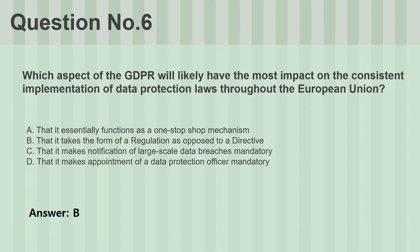Question number six. Which aspect of the GDPR will likely have the most impact on the consistent implementation of data protection laws throughout the European Union? A. That it essentially functions as a one-stop-shop mechanism. B. That it takes the form of a regulation as opposed to a directive. C. That it makes notification of large-scale data breaches mandatory. D. That it makes appointment of a data protection officer mandatory. Answer: B.